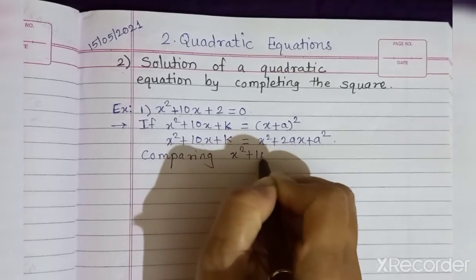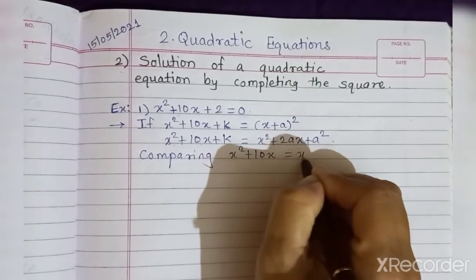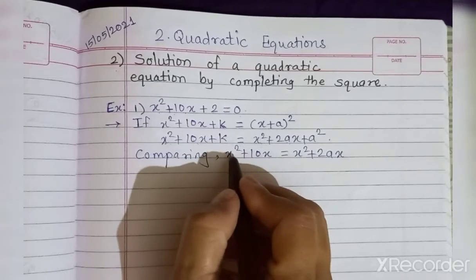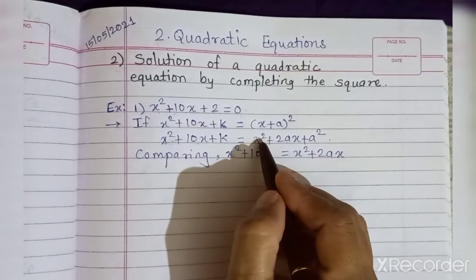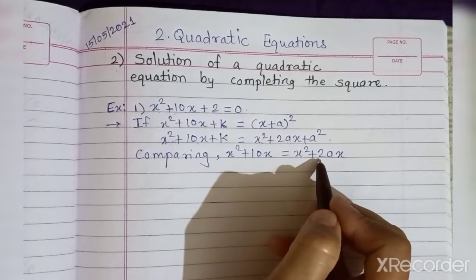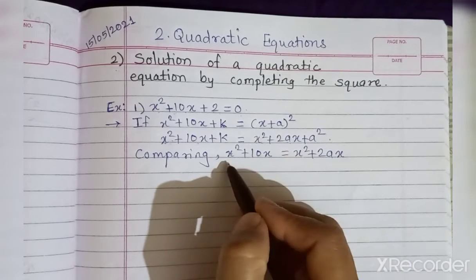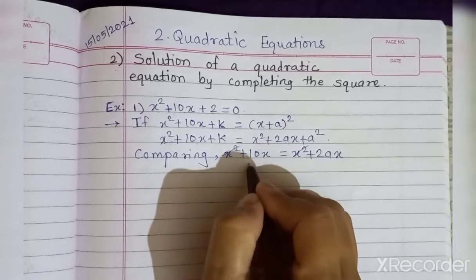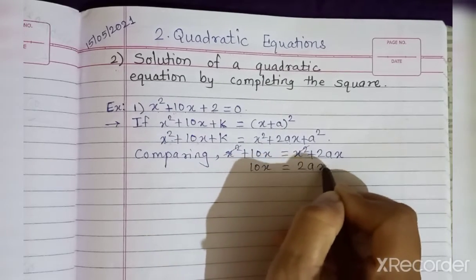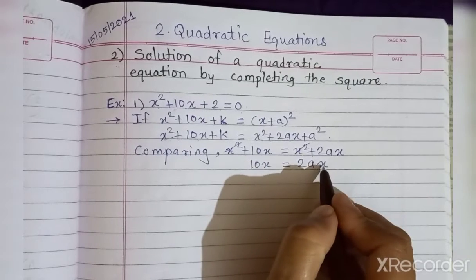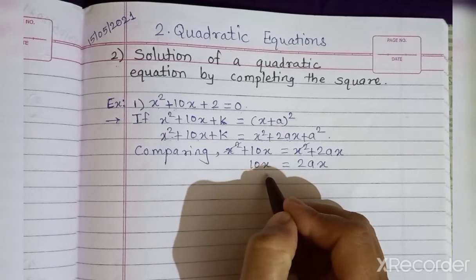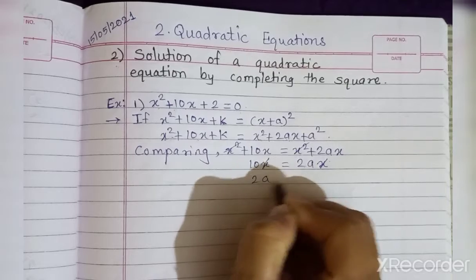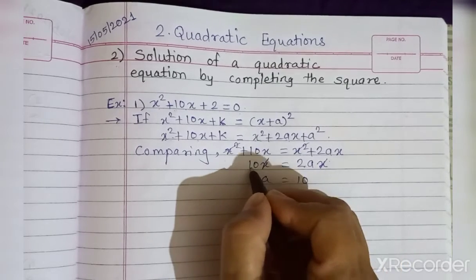Comparing: x² + 10x = x² + 2ax. Taking x² to the left-hand side, it cancels. What remains is 10x = 2ax. Now taking x to the left-hand side, it divides and cancels, so we get 2a = 10.